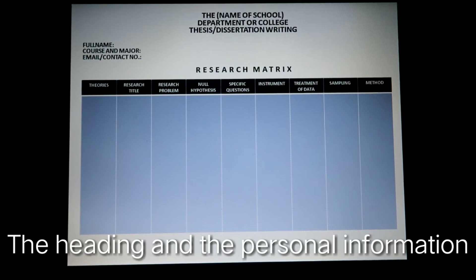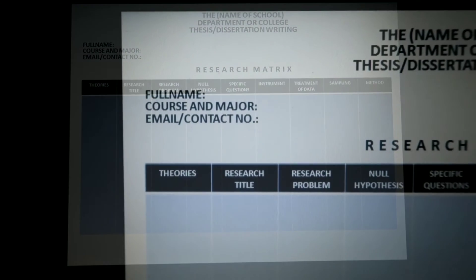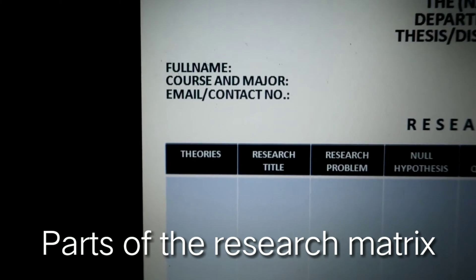Before we go on to the main table, the basic information contained in this template includes the name of the school, the department or college, whether the writer is at the college level, senior high school, or graduate level, and the type of paper being written — whether it is a thesis, dissertation, college reaction paper, or research paper. Following that would be the full name of the writer, the program, course, major or field of specialization, and the email or any contact number.